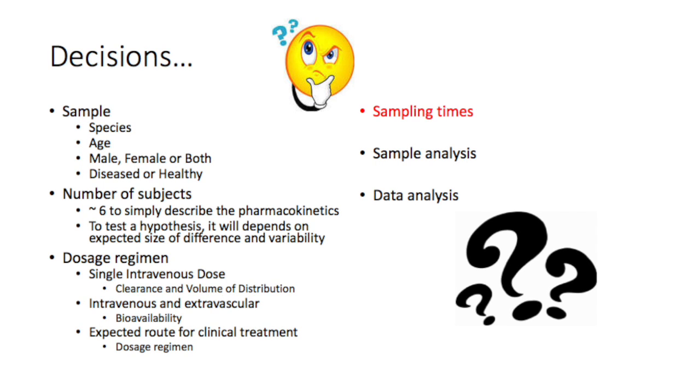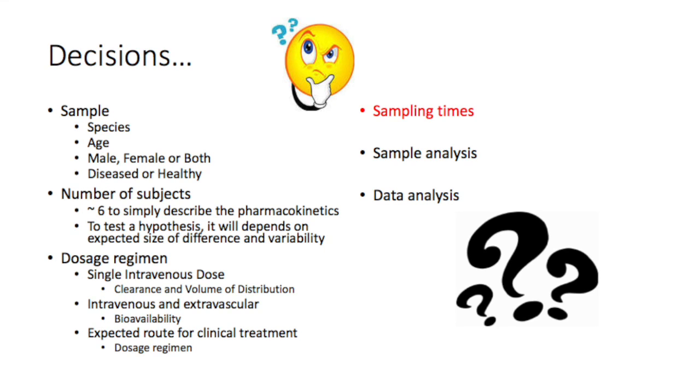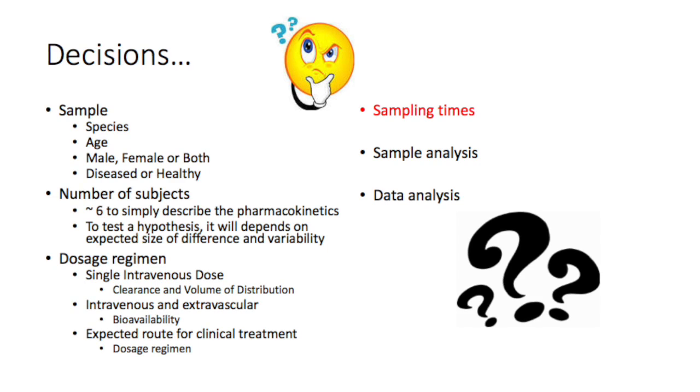The more variable your study population, the more variable your data is going to be and the larger the number of animals you will need. Your choice should be driven by the question you want to answer.